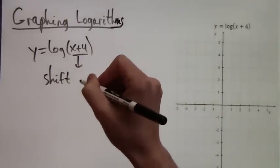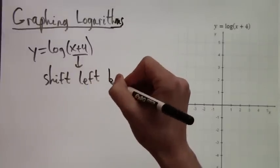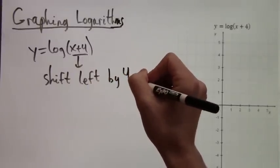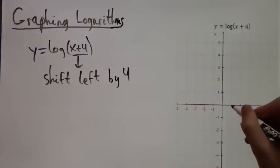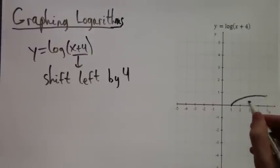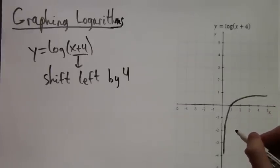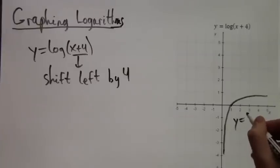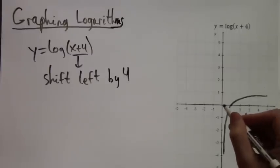The difference between this and the previous function is that we have X plus 4, and those parentheses together—what this does is it shifts the graph four units to the left. If we remember what our original graph looked like, it went through the point (1,0) and increased ever so slowly.